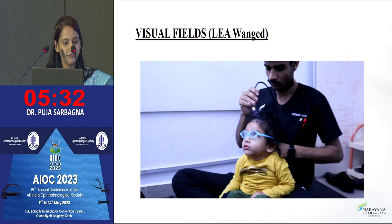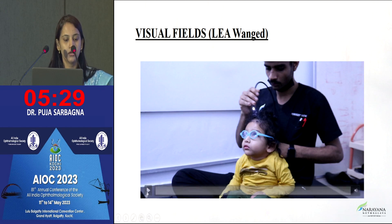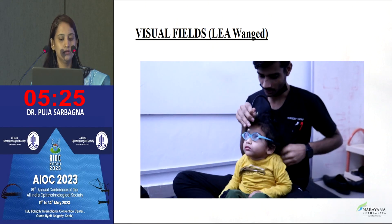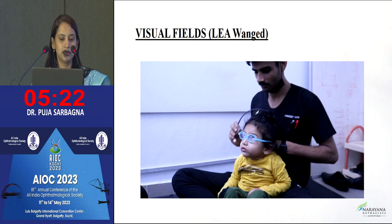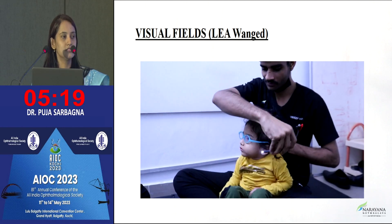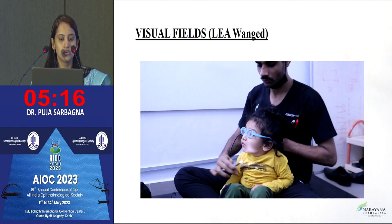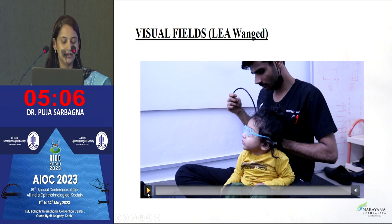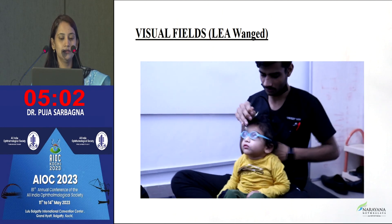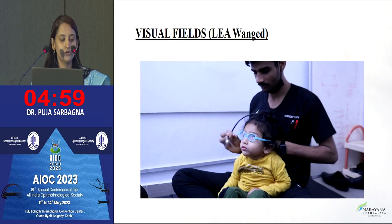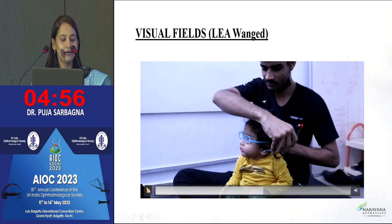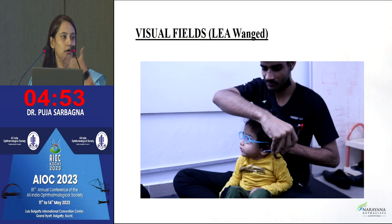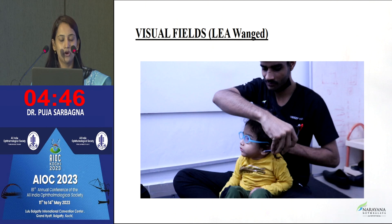Next is the visual field test, which is very functional and easy to perform. We regularly use the Lea Wand to assess visual fields. Two people are involved: one shows a light from behind while the other observes the child's eye movements from the front. The child should not see the person behind them so their response is to the light movement. We document the visual fields across different gazes. If a Lea Wand is unavailable, we hold a black card in front and show a familiar toy in different directions.